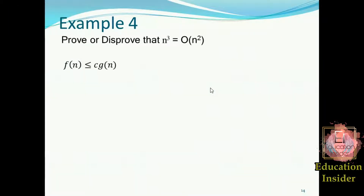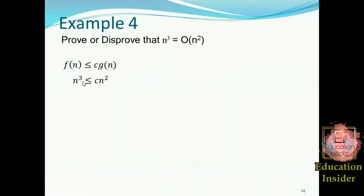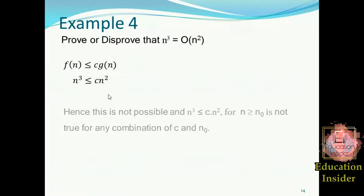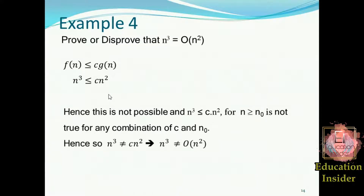Let's move to another example. We need to prove or disprove that n³ is bounded by n². We write the inequality and populate f(n) and g(n). Examining this, the left side must be smaller than the right side — but n³ is greater than n², so this inequality does not hold. This is disproved: we cannot bound n³ by n².